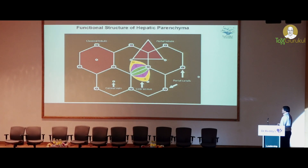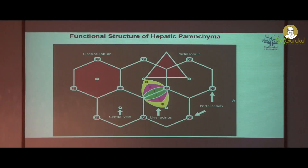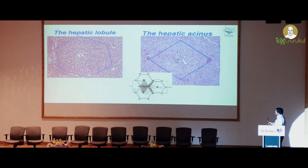Coming to the functional structure of the hepatic parenchyma, this is the most important part. This is the liver acinus. Here is the portal triad, this is the central vein, and these are zone 1, zone 2, and zone 3. This is the classical liver lobule where you have three portal triads forming a lobule, and this is the liver acinus and portal lobule. In histology you are seeing the hepatic lobule, the central vein, the hepatic sinusoid, the portal triad, and the two central veins. Zone 1 is around the portal triad and zone 2 is between the central vein and the portal triad.